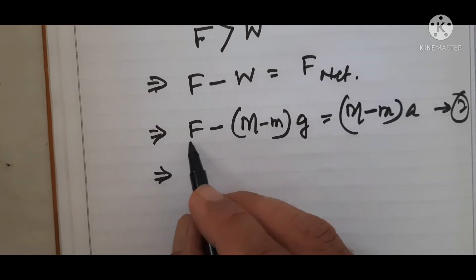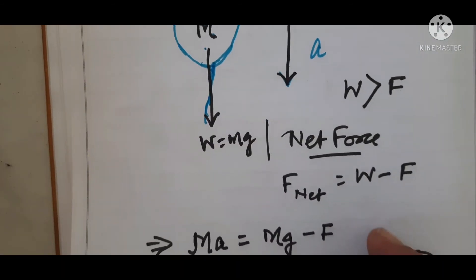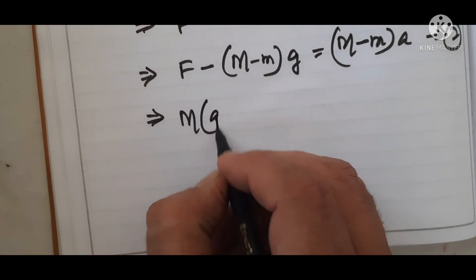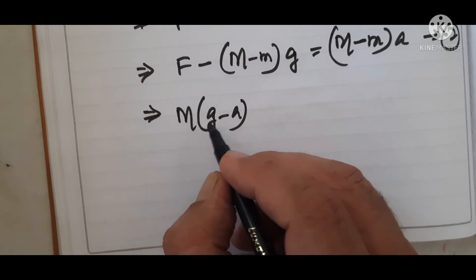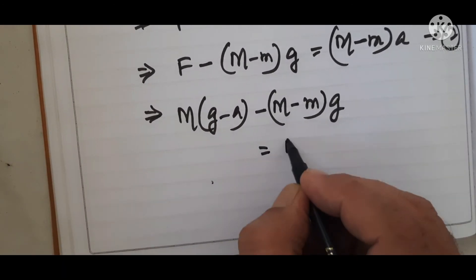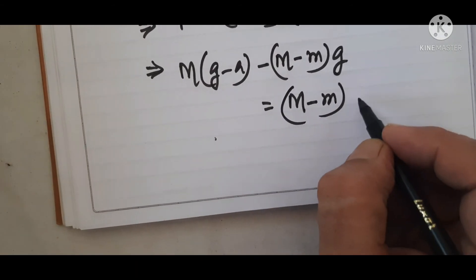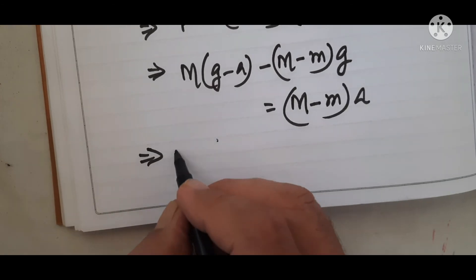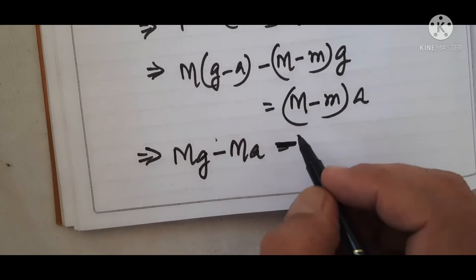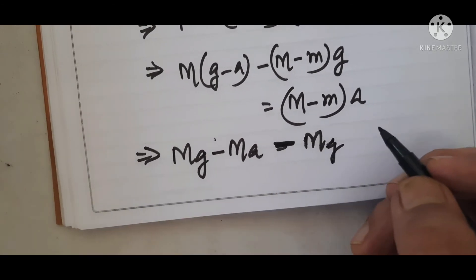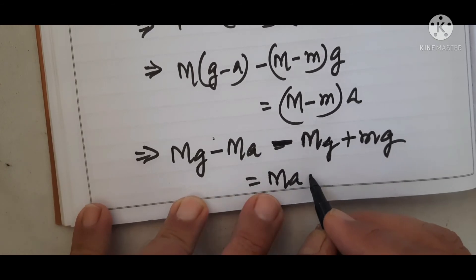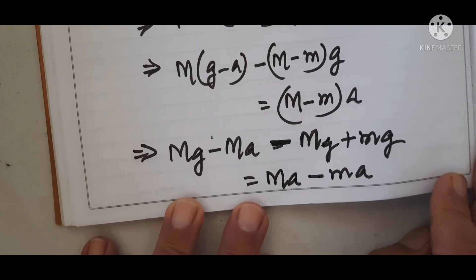Now from equation one, we substitute the value of F into equation two. F equals M(g minus a), so substituting: M(g minus a) minus (M minus m)g equals (M minus m) times A. Expanding the bracket: Mg minus Ma minus Mg plus mg equals MA minus mA. The Mg terms cancel, leaving: mg minus Ma equals MA minus mA. Rearranging: mg equals MA minus mA plus Ma, which simplifies to mg plus mA equals 2MA.